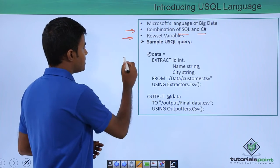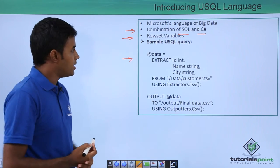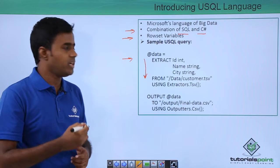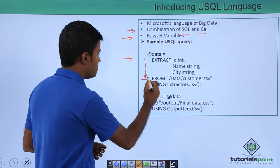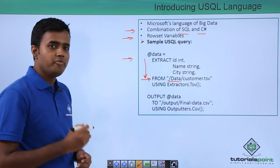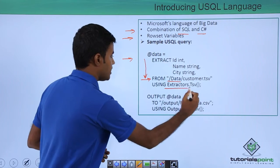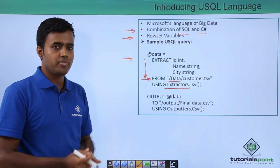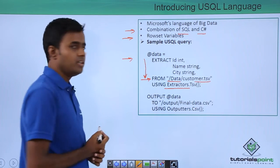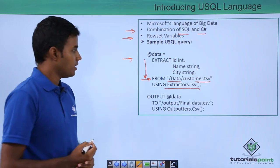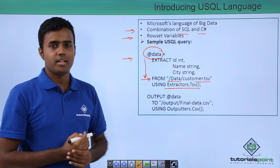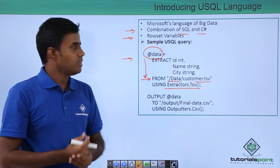Here is a sample USQL query. We are applying a schema when reading from a TSV file stored within the data folder. We are making use of a class called Extractors. Using Extractors.Tsv, we extract data from the TSV file. The entire data is stored within the variable called @data, which is a variable that can store your data.